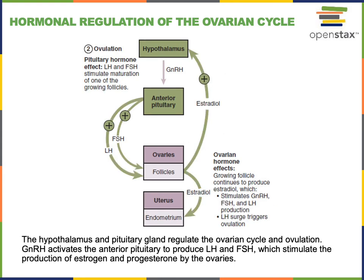Around the 14th day of the ovarian and uterine cycle, the control mechanism regulating estradiol switches from negative feedback to a positive feedback mechanism, where estradiol stimulates the production of increasing levels of GnRH, leading to even higher levels of LH and FSH. As LH levels surge, this stimulates the process of ovulation — the release of the immature egg cell, known as a secondary oocyte, from the ovary.